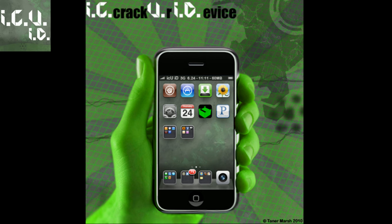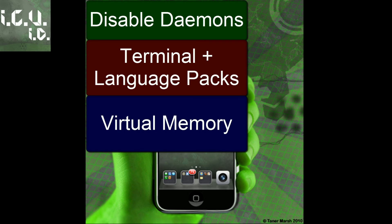There are three different things you can do, and three different bubbles to choose from. One would be disabling daemons, two would be disabling and deleting language packs, and the last one would be virtual memory. Just click the bubble you want to go to and you will be taken there — this is the selection part, so you can just select whichever one you'd like.